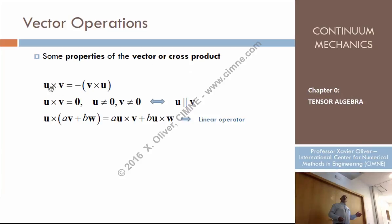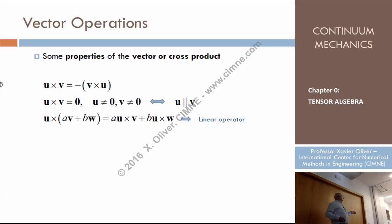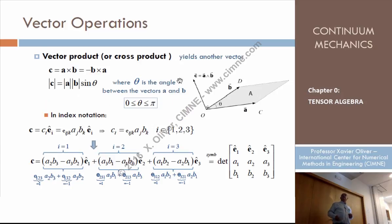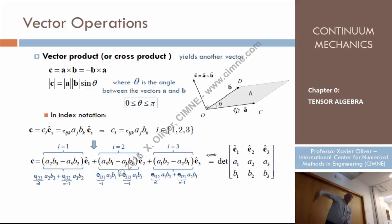The cross product, or vector product, is not commutative. When we invert the product, we obtain vectors which change sense. This is because of the original definition: if we interchange A times B, then the corkscrew law gives a vector that is orthogonal to the same plane but pointing down. So it changes sense.